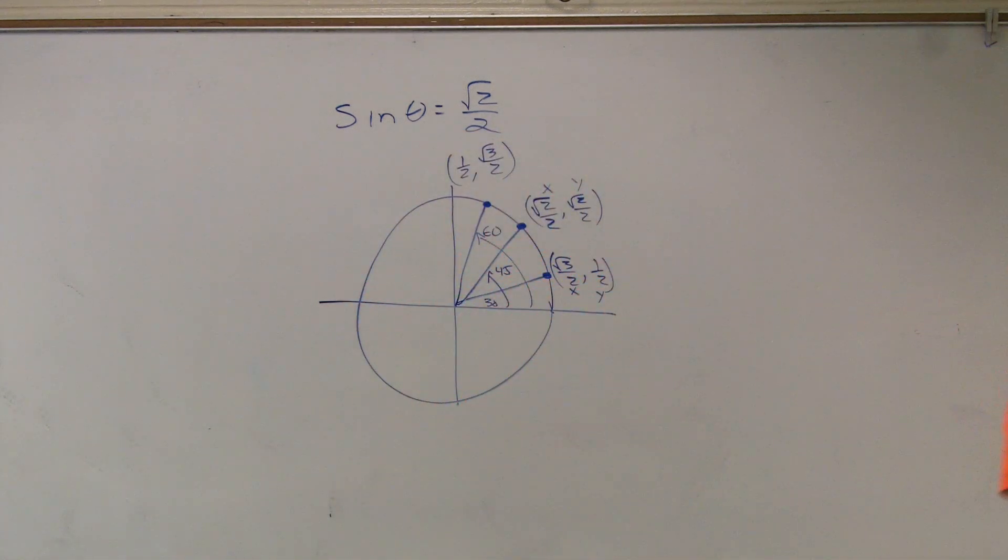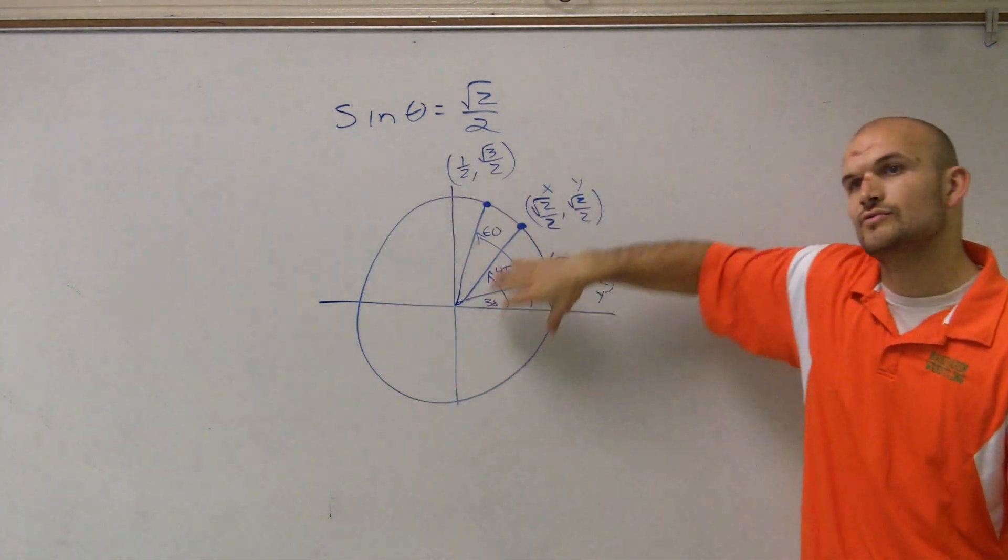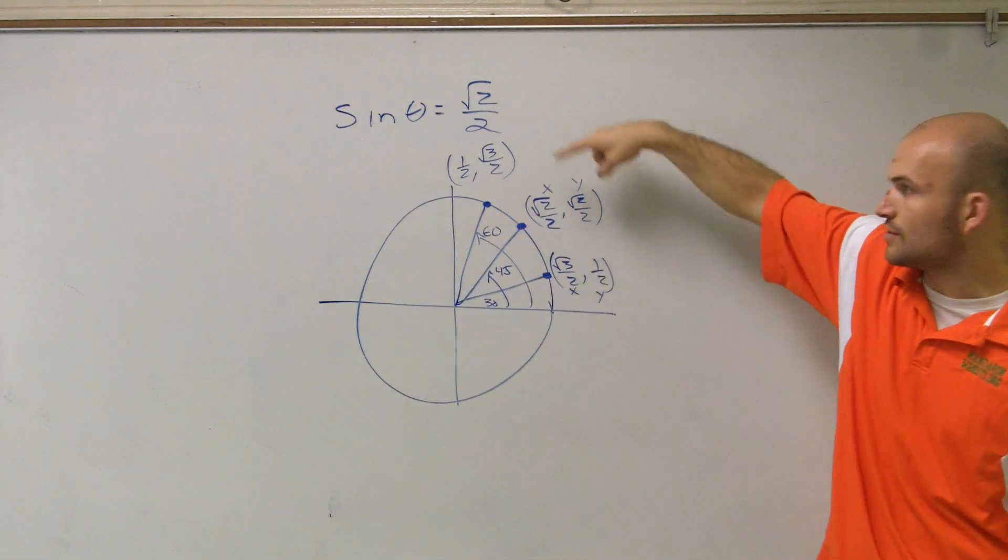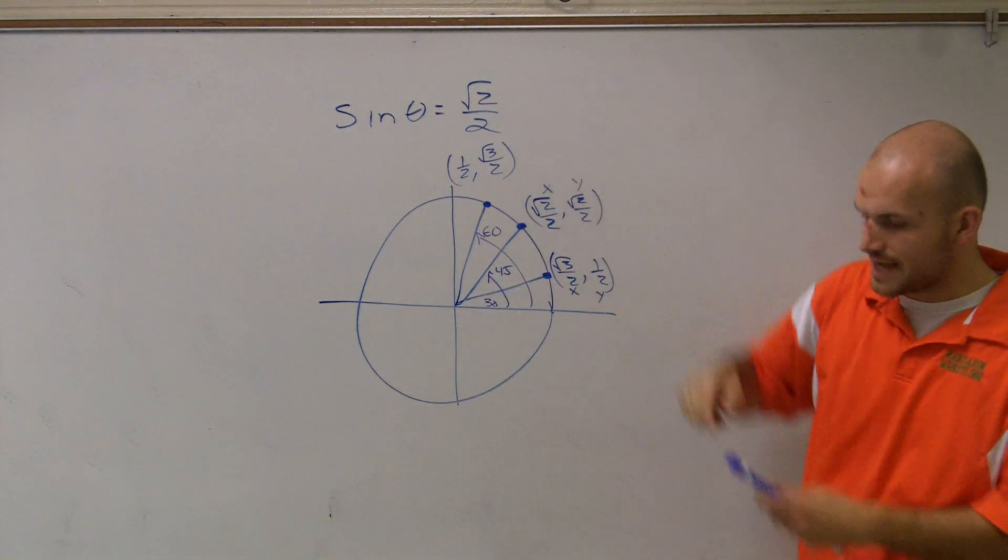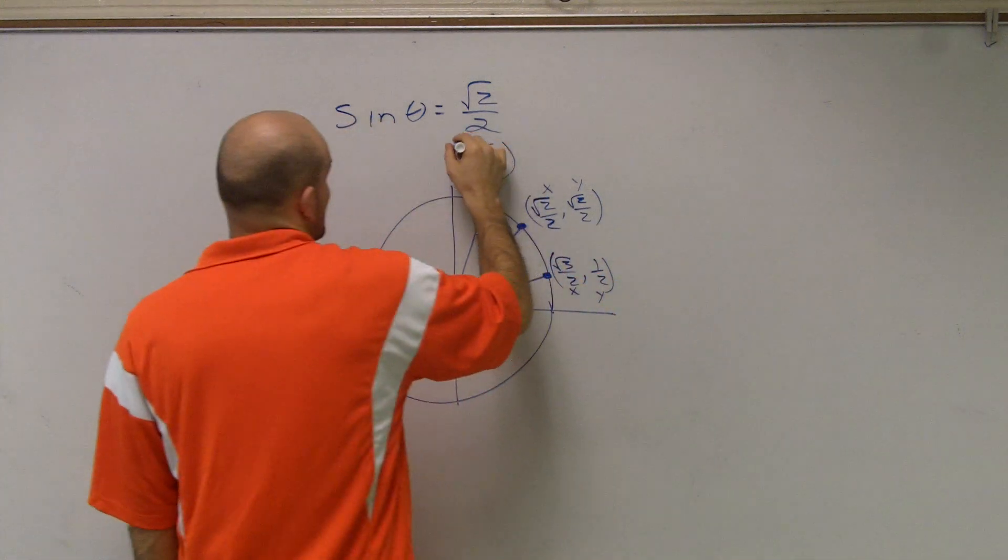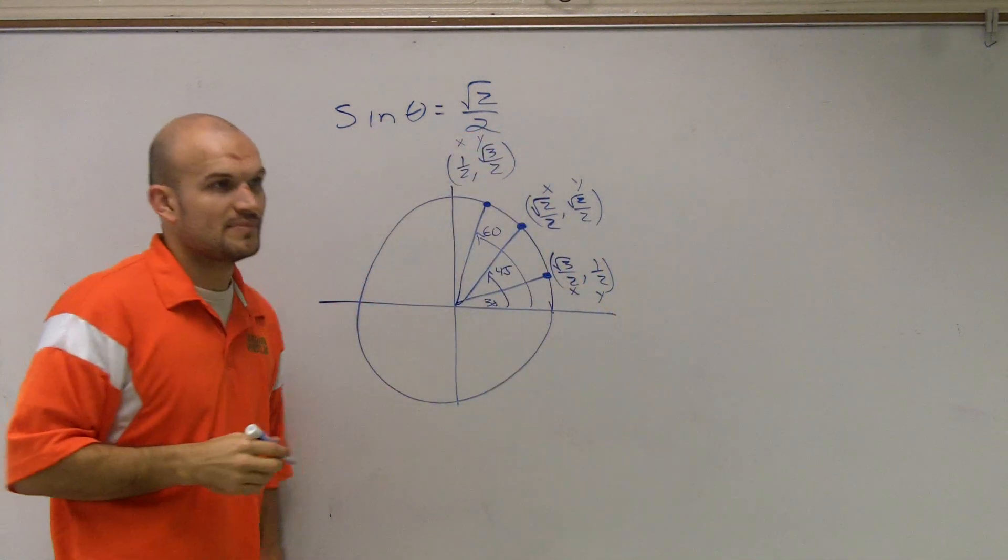Because we're getting to the point now where we need to make sure that we understand at least our three important points on the unit circle. We can use that to rewrite all the way around. But if I know what the x and y coordinates for those three points are, it's really going to be beneficial.